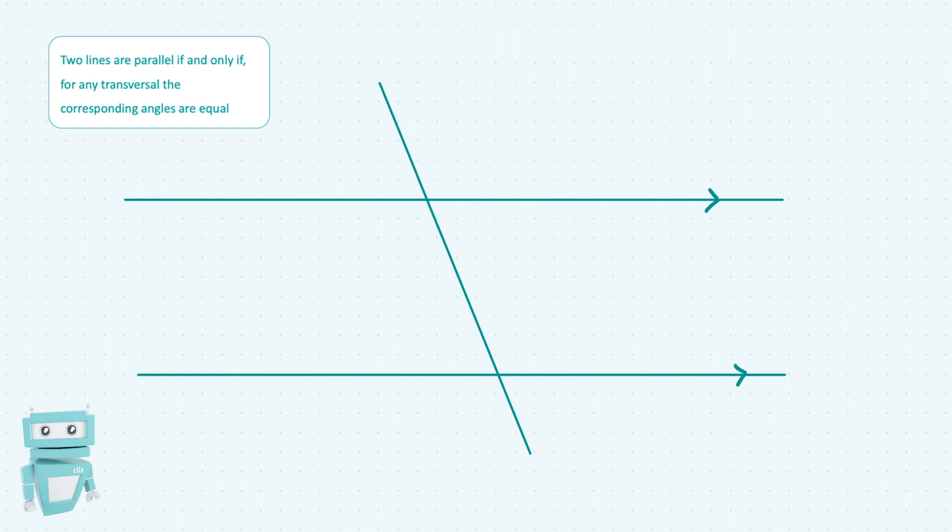The corresponding angles in this case are going to be essentially the two sets of angles that are in similar positions according to this transversal line which runs this way. There's actually four sets of corresponding angles, but we're going to choose these two.